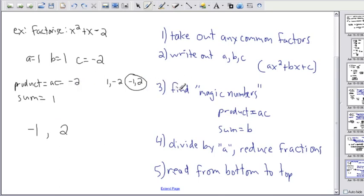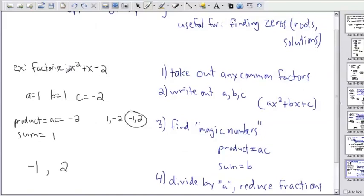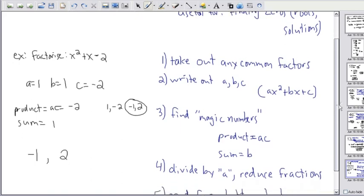What happens if you can't find these magic numbers? Well first you have to be really careful to make sure you've thought of all the combinations, something like 1 and negative 2 and negative 1 and 2. If you can't find the magic numbers, then this thing does not factor. It's very possible that it doesn't factor. I just want you to keep that in mind.